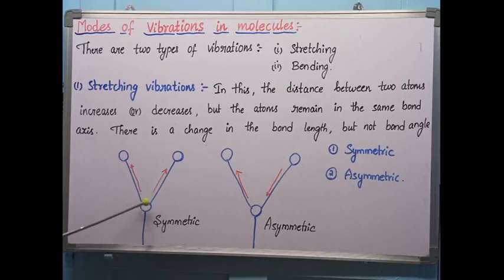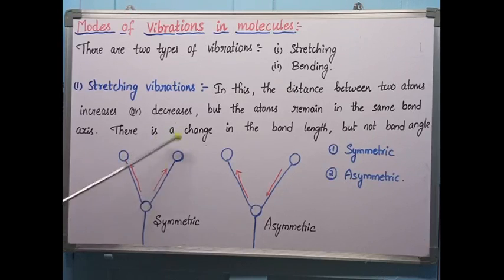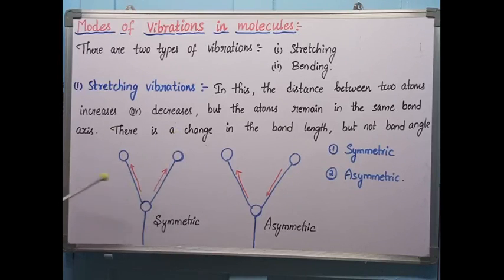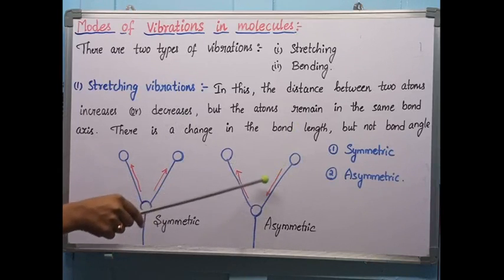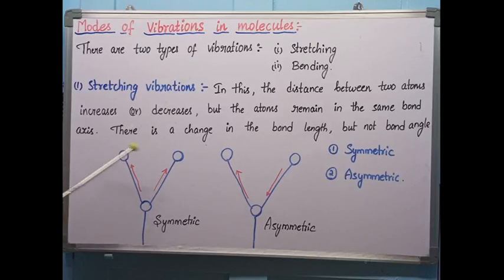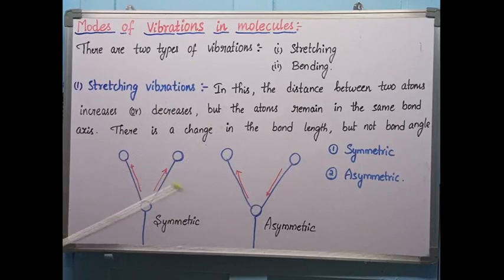In symmetric stretching, the two atoms are stretched in the same direction — both move to the front or both move to the back. In asymmetric stretching, one atom stretches in the front direction while the other stretches in the back direction, meaning both atoms move in different directions.